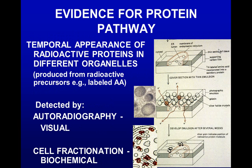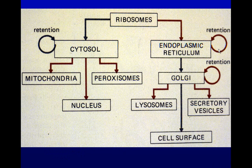Evidence for the secretory pathway comes from the temporal appearance of radioactivity in different organelles — first in the rough endoplasmic reticulum, followed by the Golgi apparatus. Palade used two methods: autoradiography of tissue itself and cell fractionation, where he compared smooth versus rough vesicles.